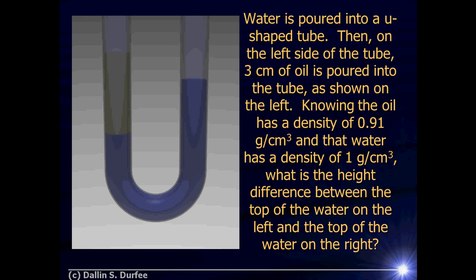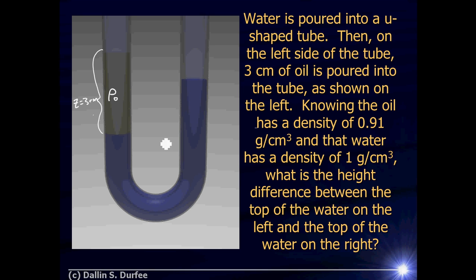Next problem: water is poured into a U-shaped tube. Then, on the left side of the tube, 3 centimeters of oil is poured in. I have water in this tube and a column of oil sitting on top — let's call that distance Z equal to 3 centimeters. I give things variable names because I don't want numbers flying around in my equations — it also prevents me from being able to check my answers properly. The question is: what is the height difference between the top of the water on the left and the top of the water on the right?